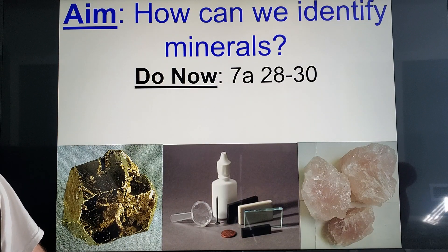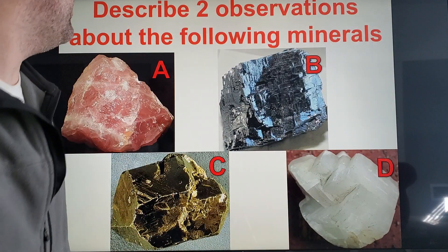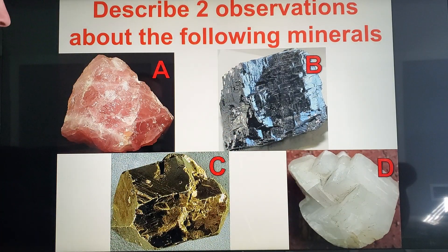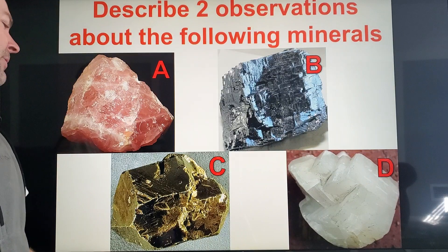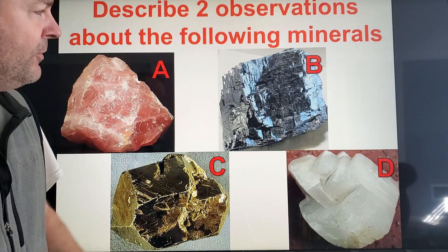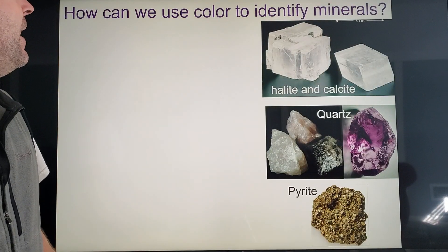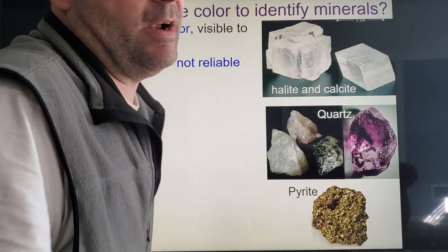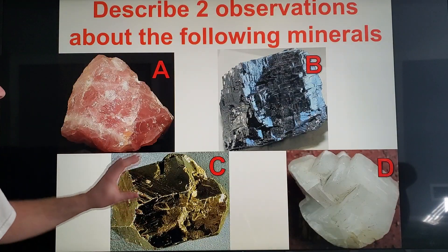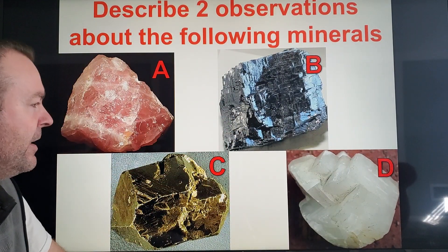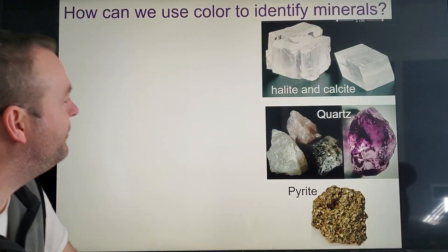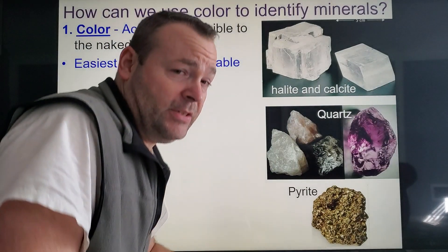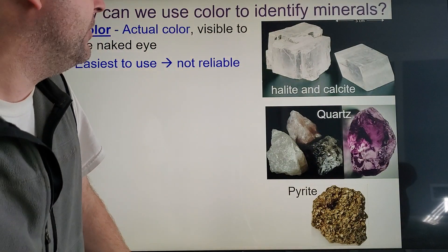Let's identify minerals. Describe two observations about the following minerals — what do they all have in common? Hopefully you said they're all pretty shiny looking; they all reflect a lot of light. Also, they're all in many different colors. Those are two properties to help identify minerals.